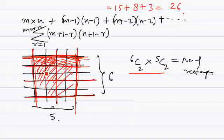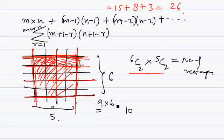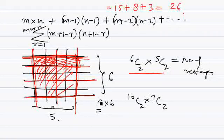Note that this total also includes squares of all sizes. So if you want only rectangles without squares, you subtract the squares. Now applying the actual question dimension of 9 by 6: a 9×6 grid has 10 horizontal lines and 7 vertical lines — one more than the grid size in each direction. So the number of rectangles is 10C2 × 7C2.